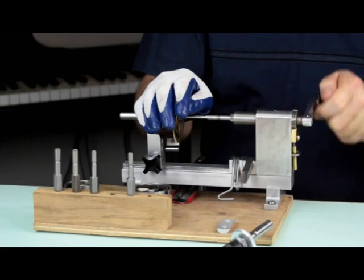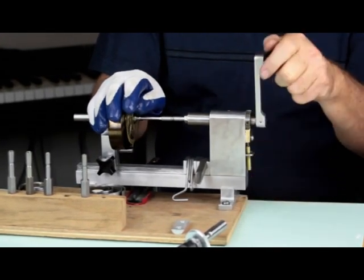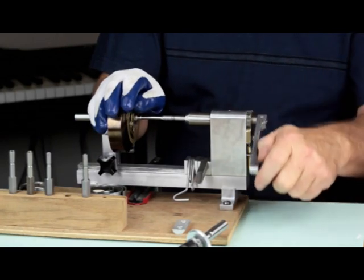As the spring unwinds, it may try to bulge out of the sides. Keep your fingers around the spring to hold the sides in place until the spring is totally unwound.